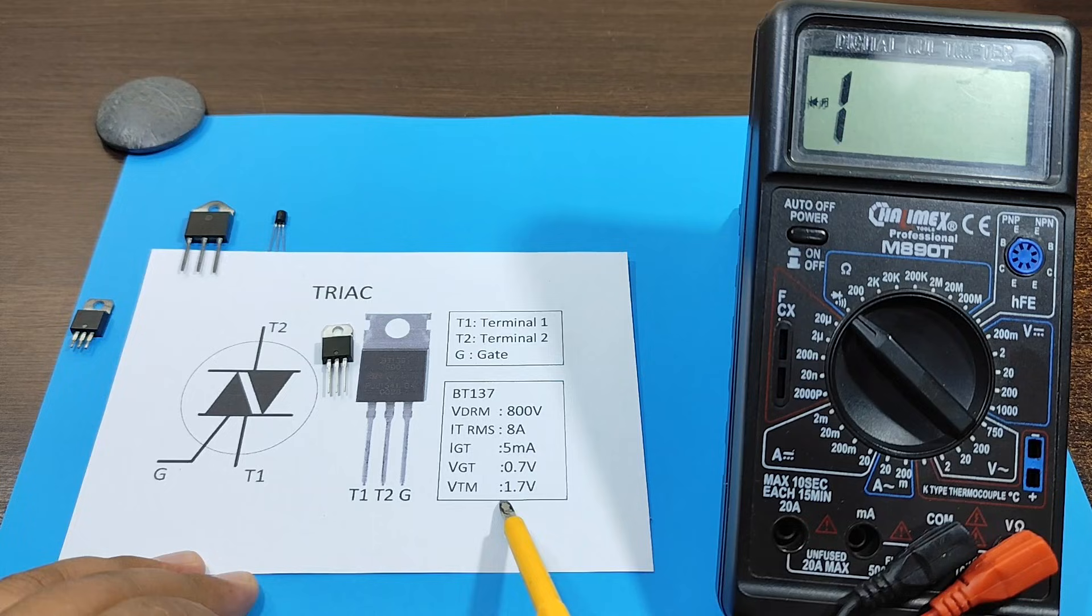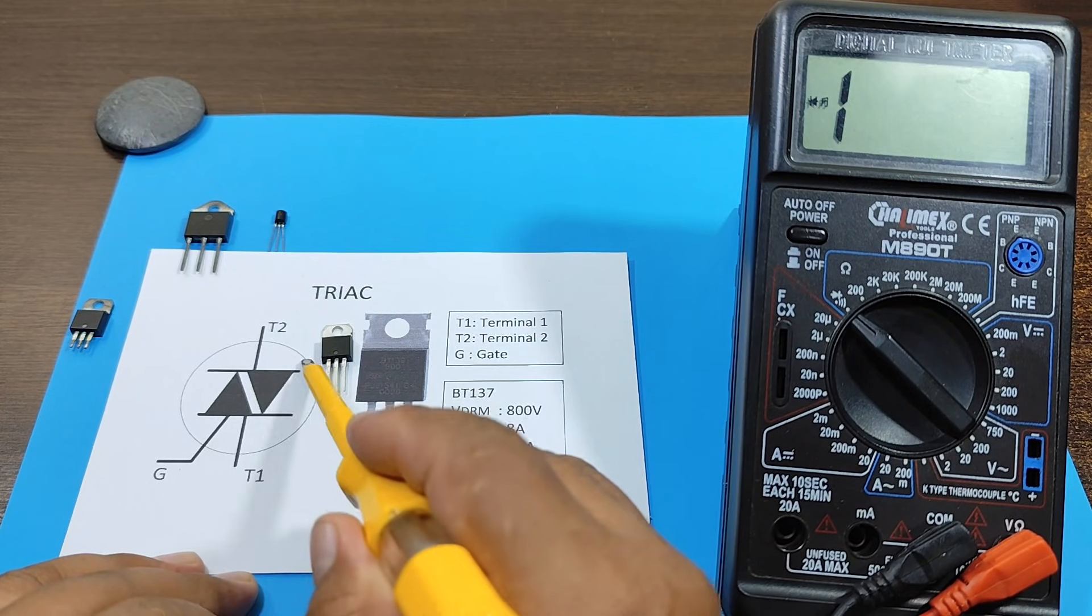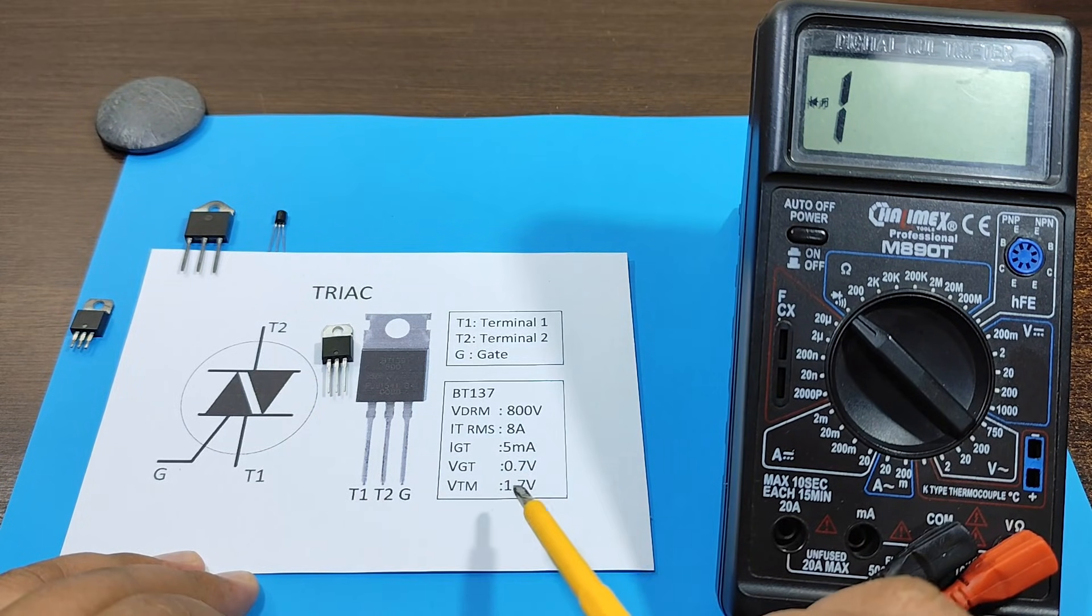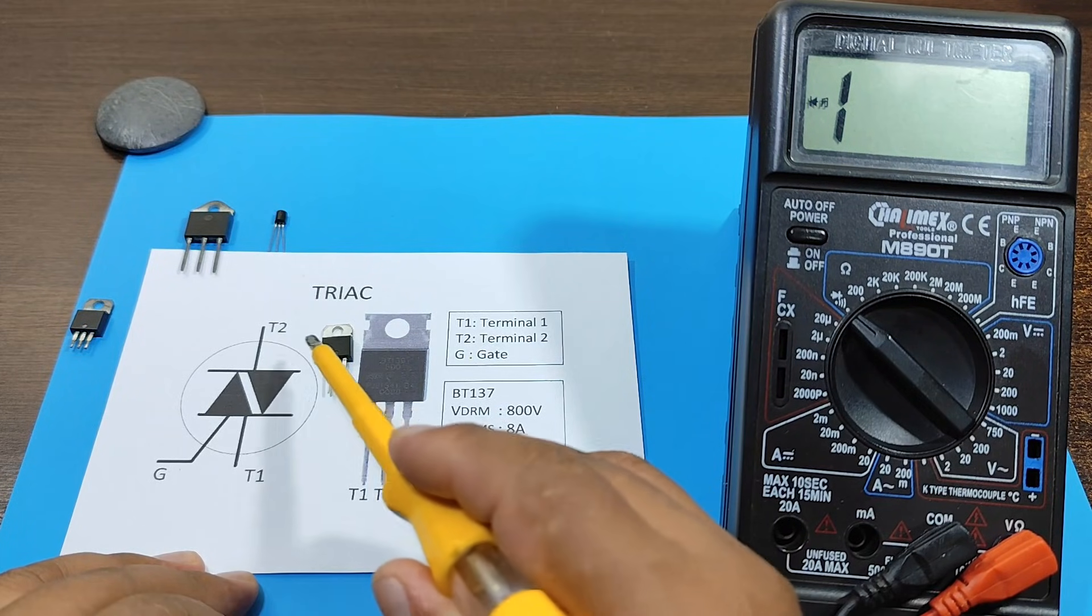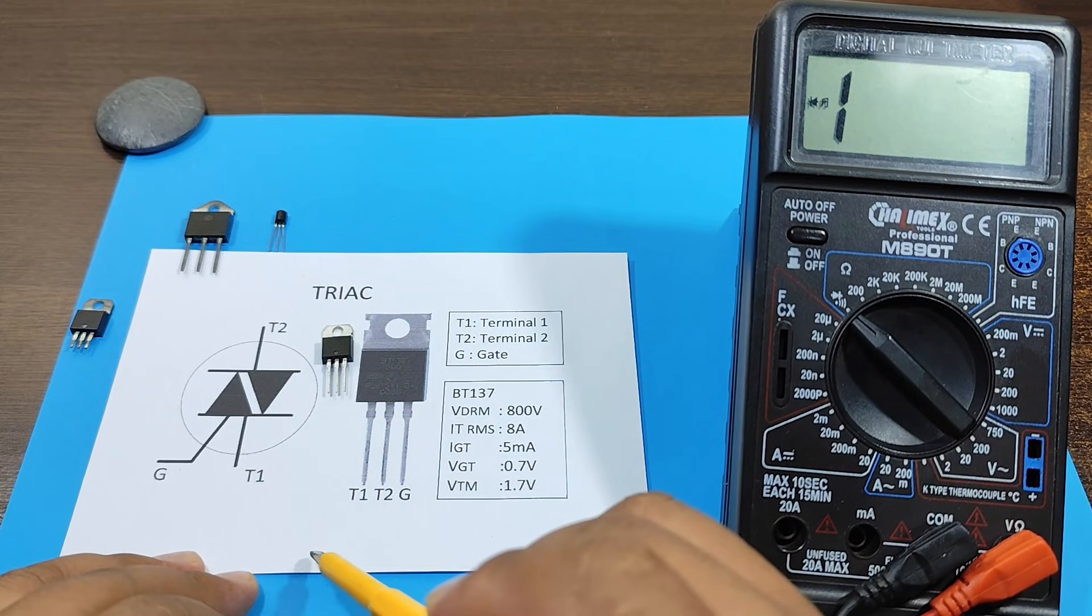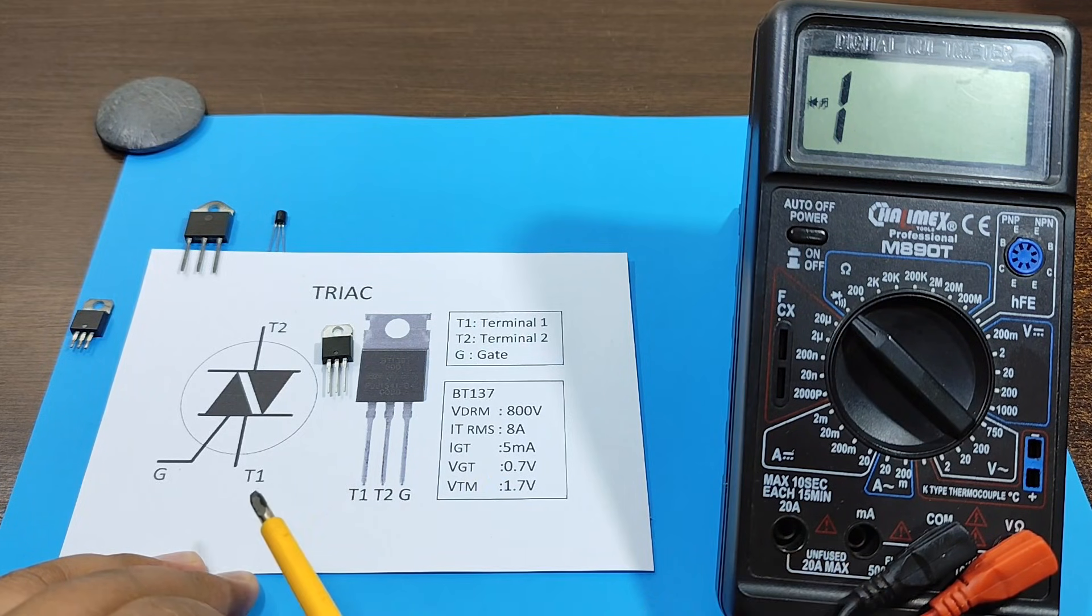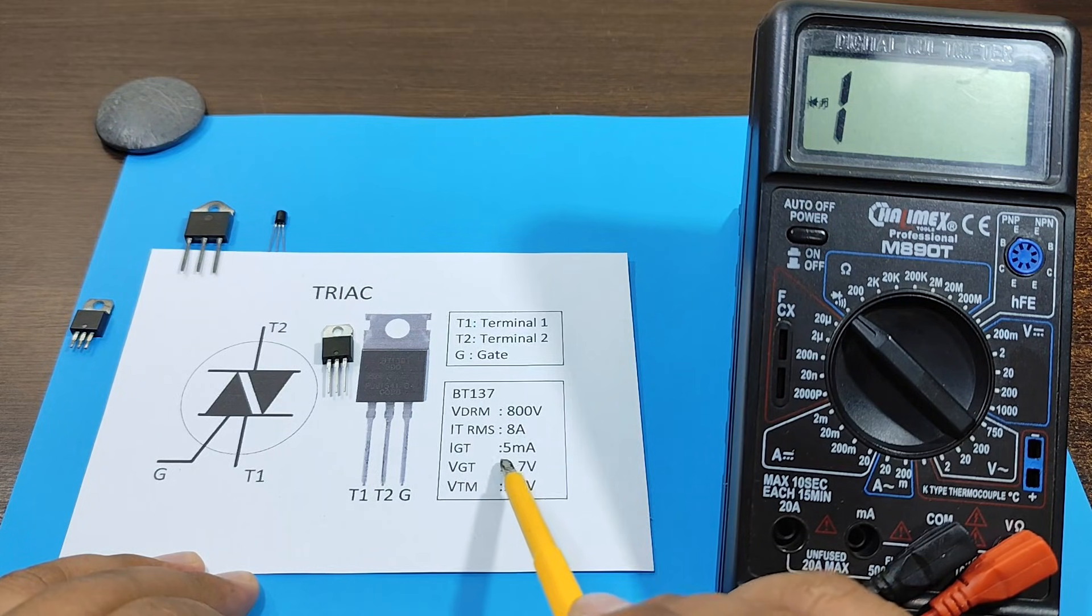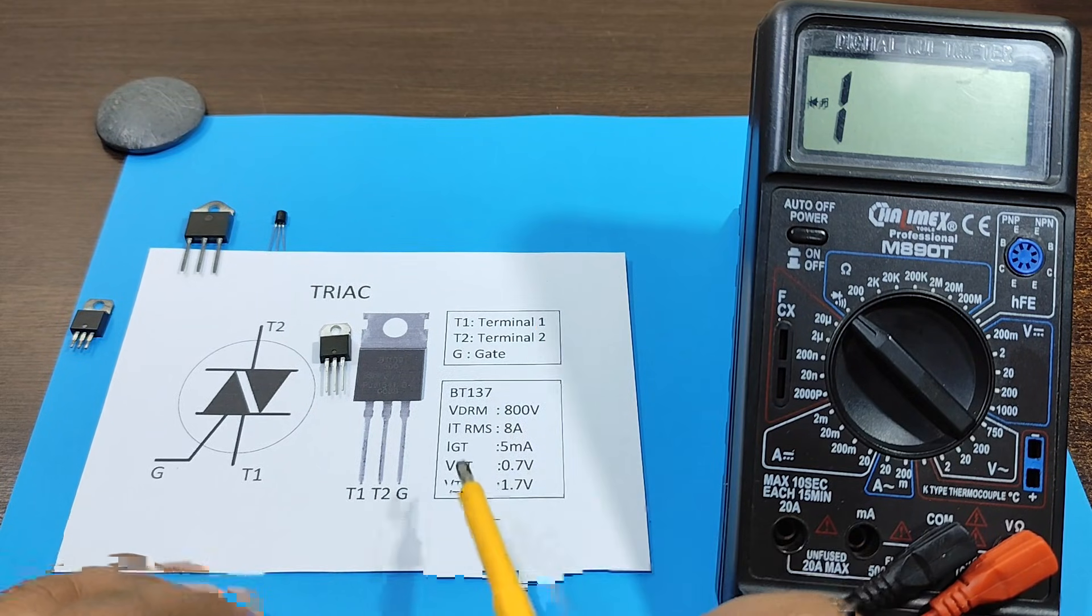And it's the same in the case of a triac. Then we have the VTM. VTM is the voltage that will appear between T1 and T2 when the triac is operating. And this will allow us to know how much power the triac will dissipate when it allows a certain amount of current to pass through. These characteristics are similar in most triacs, so they are not usually taken into account. However, these three characteristics should be considered.